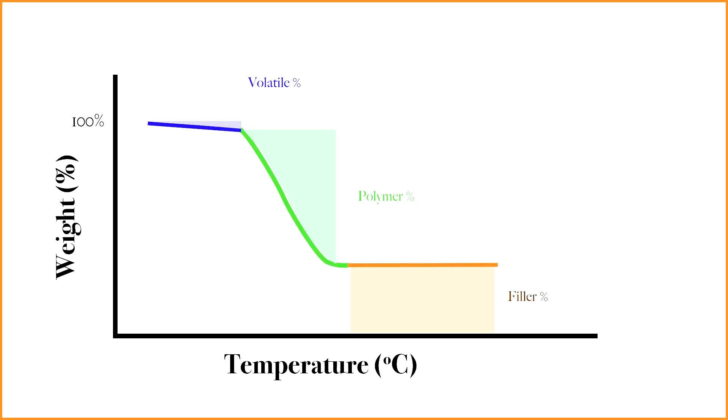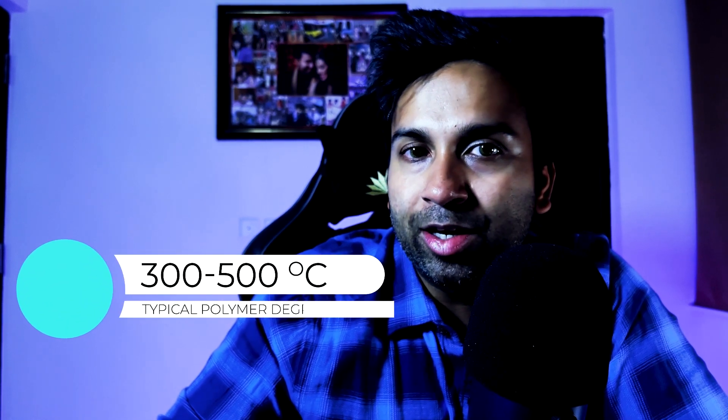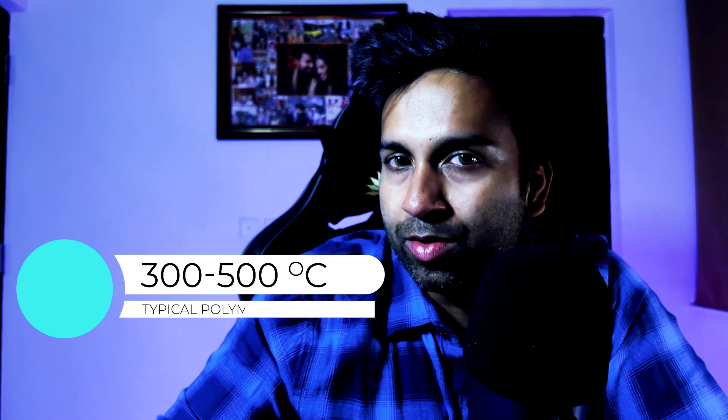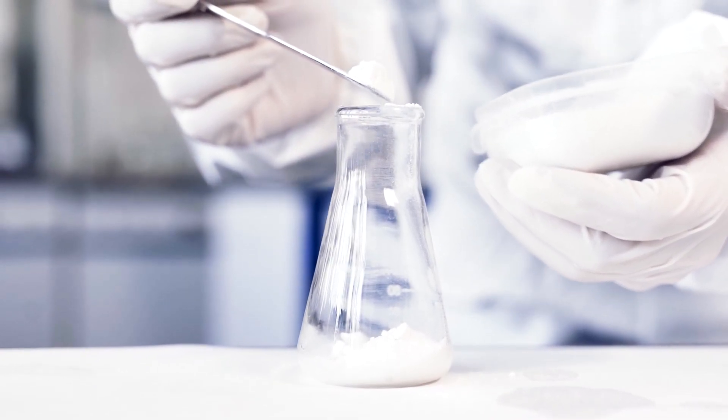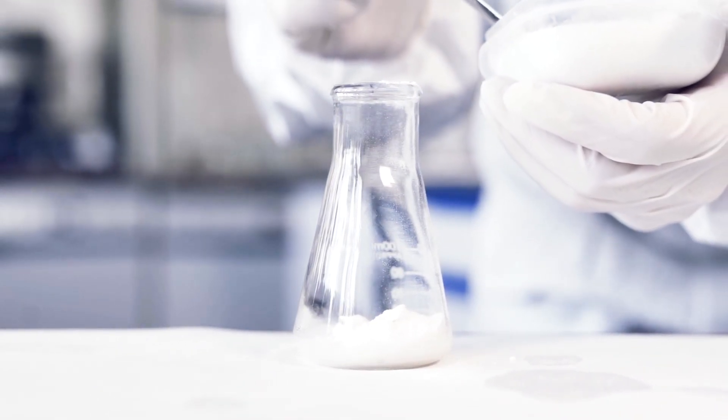The second use of TGA is to help quantify the chemical profile of the polymer. As the polymer is subjected to different temperatures, various components of the polymer degrade at different levels. For example, the moisture content of the polymer starts to evaporate at 100°C, which is shown by the weight loss in this range. Similarly, the polymer itself, depending on the type, can degrade between 300 to 500°C. In critical industries like food and pharma, TGA can be used as a really effective technique to find the purity of the sample.